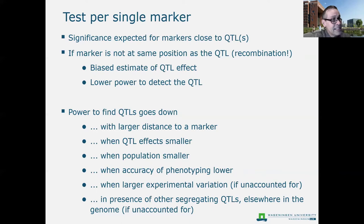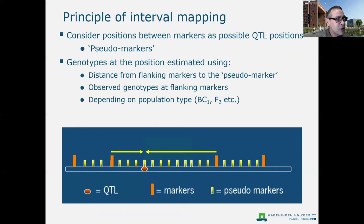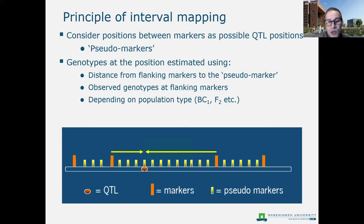The next approach is interval mapping, which solves some of the issues from single marker analyses. In interval mapping we don't consider only the marker positions themselves, but also positions in between the markers. We can think of it as pretending we have markers in between the real markers — orange for the true markers, yellow for the positions where we also want to test for a QTL.